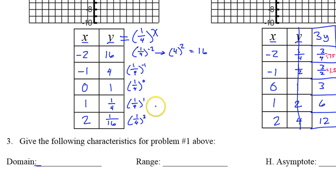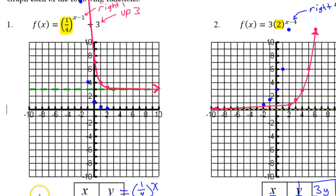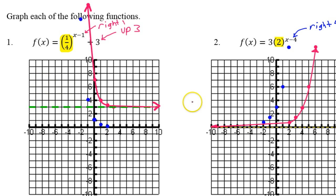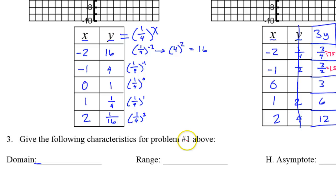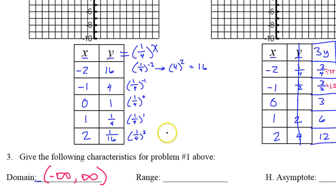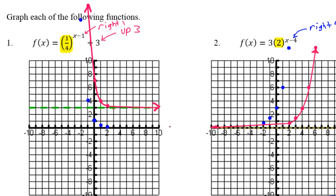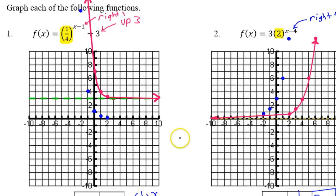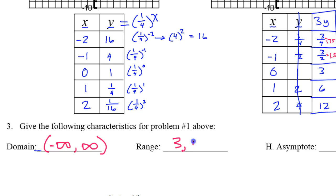Problem number three just wants a little extra information about problem number one. The domain is pretty easy. The domain is just how far any graph goes from left to right, and this one goes left forever and right forever. So that's going to be negative infinity to positive infinity. Now the range will not be negative infinity to positive infinity. This graph goes up forever, so that's positive infinity, but it does not go down forever. It levels out and approaches the asymptote that's here at 3. So when you write the range, you always want to write it from bottom to top, and this one goes from 3 to infinity.